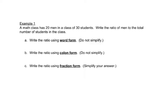This says a math class has 20 men in a class of 30 students. Write the ratio of the men to the total number of students. So those words tell you which numbers to use and in what order to put them in. So we have 20 men and 30 students. In word form we would write 20 to 30. Here it says do not simplify so we just leave it like that.